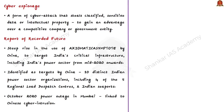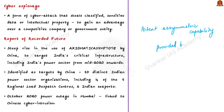In today's world of technology, cyber operations provide some countries like China with potent asymmetric capabilities to conduct cyber espionage — a form of cyber attack that steals classified, sensitive data or intellectual property to gain advantage over a competitive government entity. India-China relations have deteriorated significantly after the border clashes in May 2020. An analysis by Recorded Future found a large increase in suspected targeted intrusion activity against Indian organizations by Chinese state-sponsored groups. The report says that from mid-2020 onwards, there was a steep rise in the use of an infrastructure called 'axiomatic asymptote' to target India's critical infrastructure, including India's power sector.